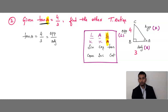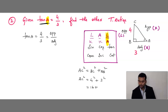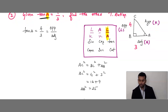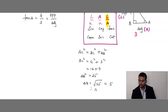Here is another practice problem: if sin A = 3/4, calculate cos A and tan A. Sin A = 3/4 means opposite/hypotenuse = 3/4. The adjacent side is not given, so use Pythagoras to find it. Then cos A = adjacent/hypotenuse and tan A = opposite/adjacent. You only need to find cos A and tan A — nothing else.